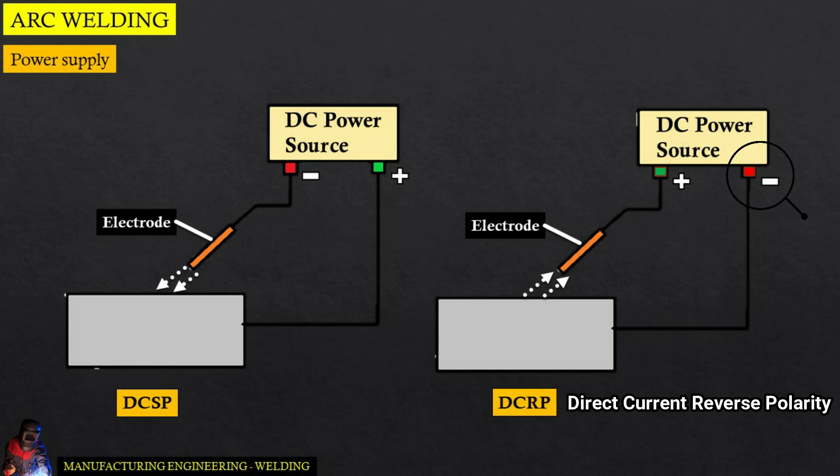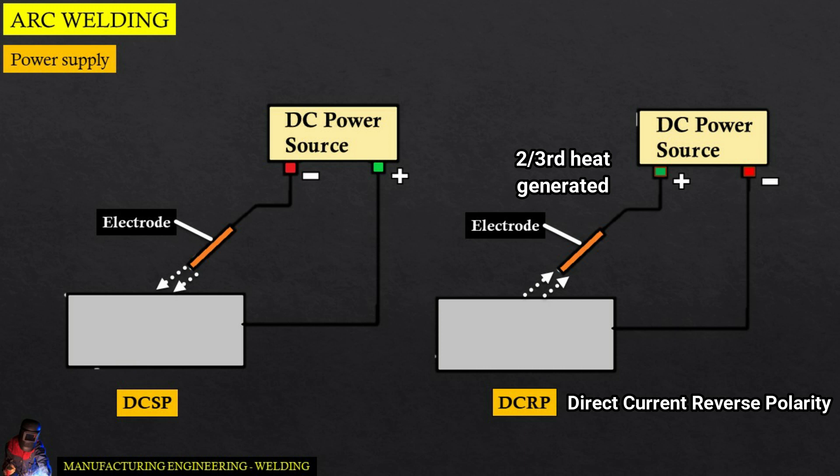DC RP means direct current reverse polarity, in which the workpiece is connected to negative and the electrode is connected to positive. Two-thirds of the heat is generated on the positive side. The depth of bead penetration is shallow and the width of the bead pass is broad in the case of DC RP.